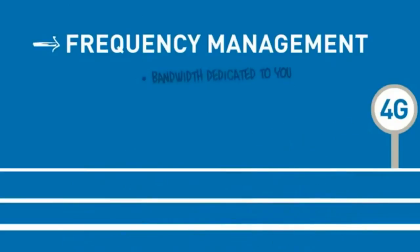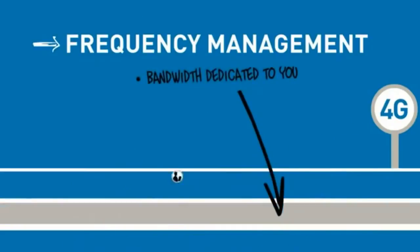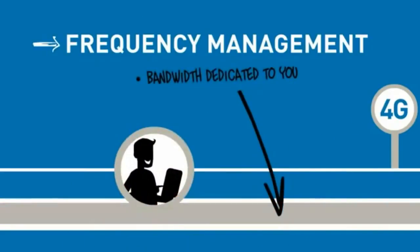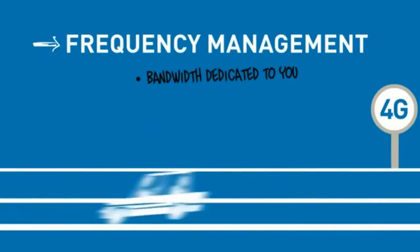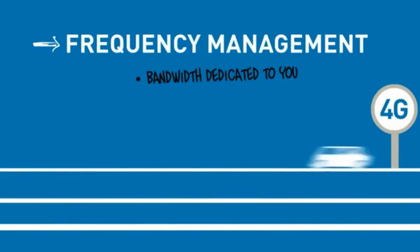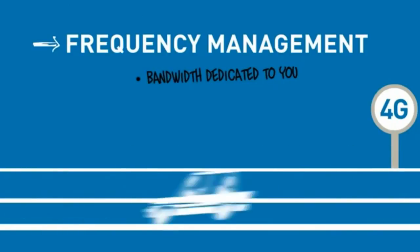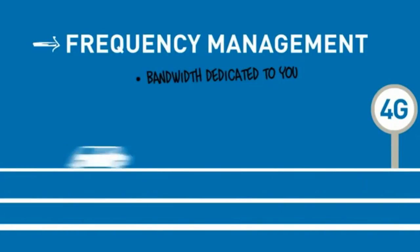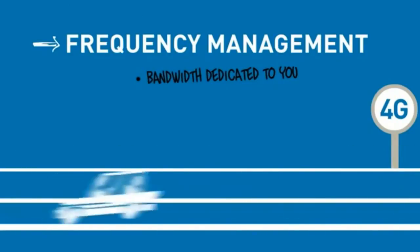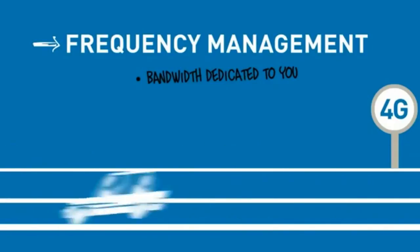4G uses much more efficient radio coding. This means you will receive bandwidth that's dedicated to you. Think of a racetrack reserved just for your race car — you can go as fast as you want. And if other tracks are available, you can use them for even more throughput.